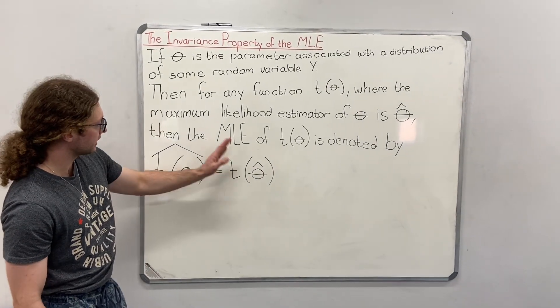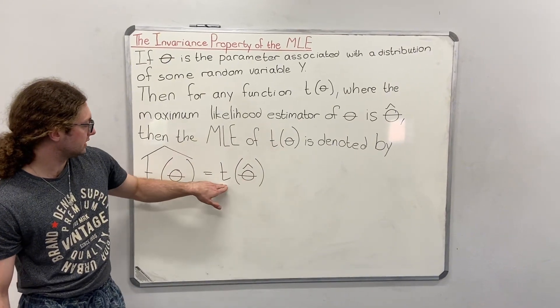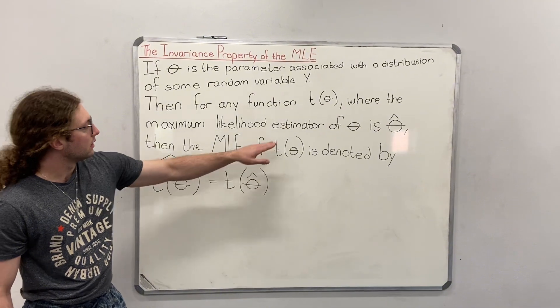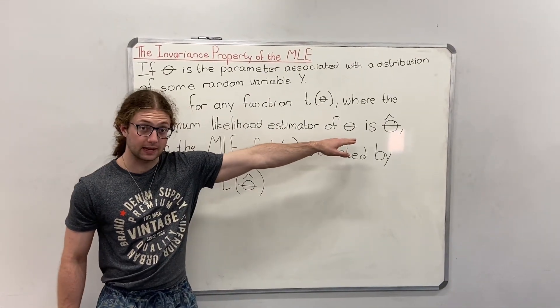then the maximum likelihood of t theta is denoted by t theta hat equals t theta hat. So the maximum likelihood estimator of t theta is t theta hat, because for t theta, the maximum likelihood estimator of theta is theta hat.